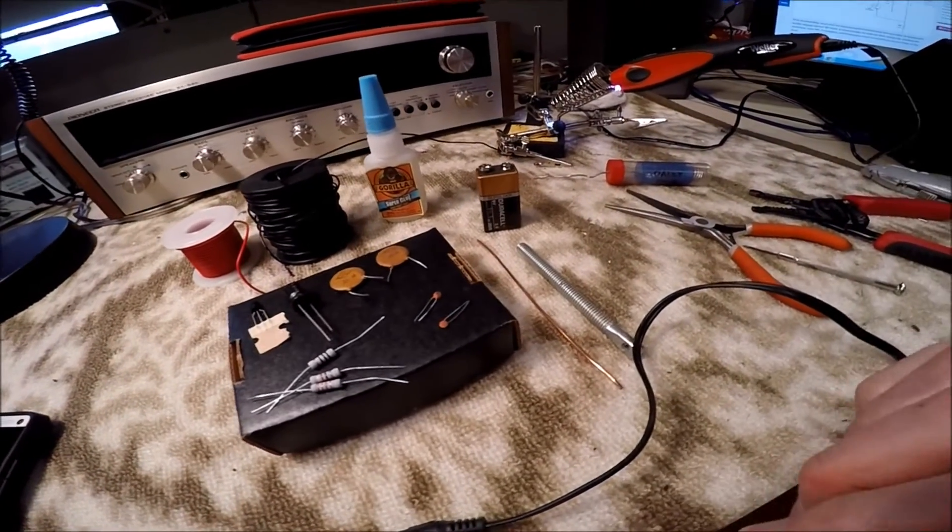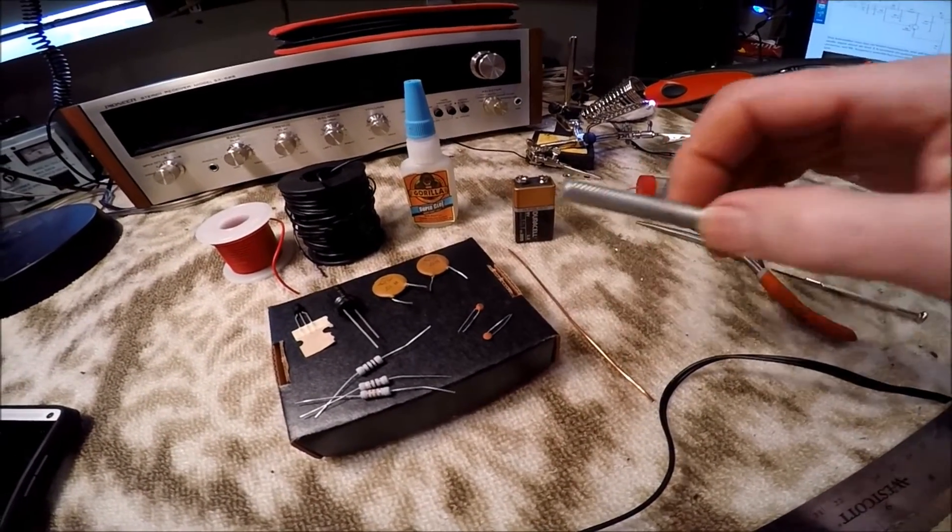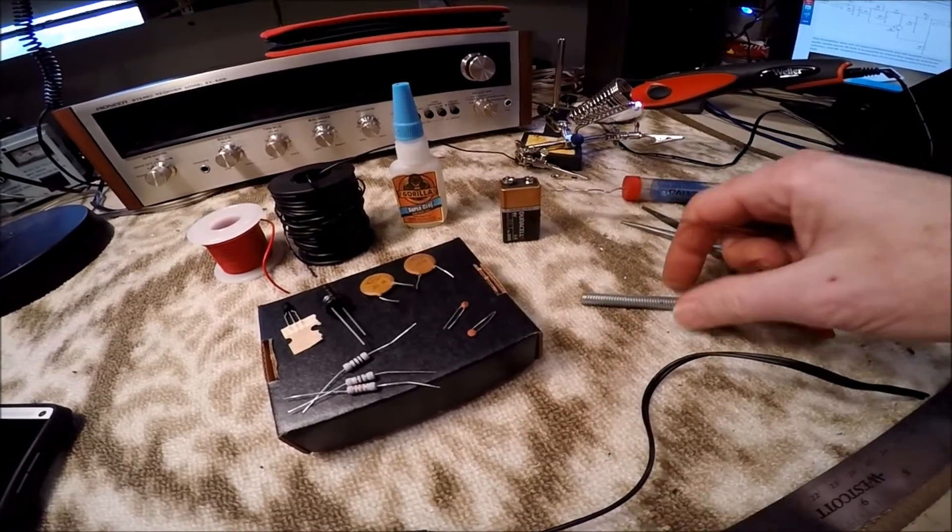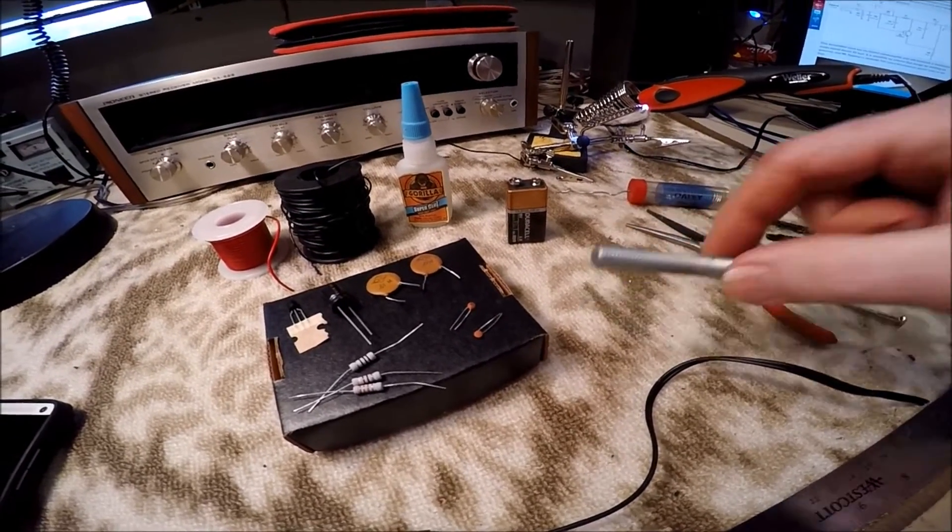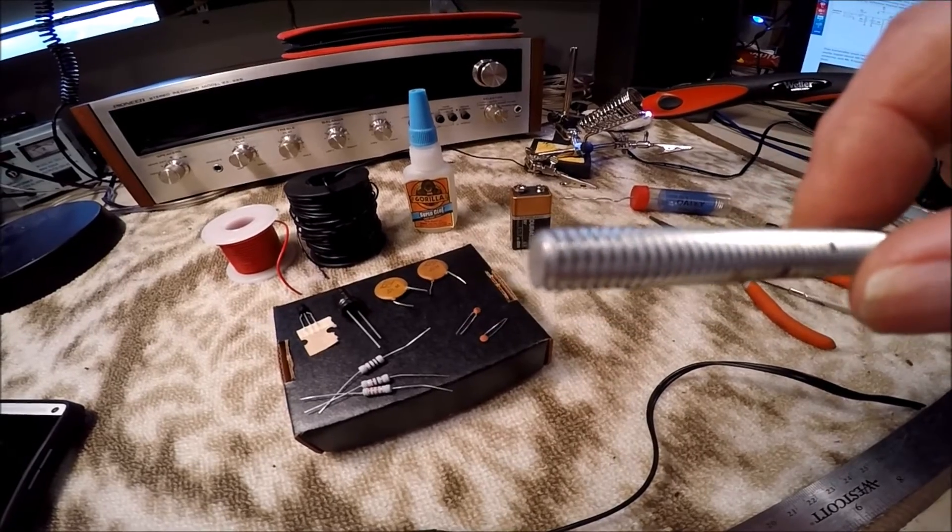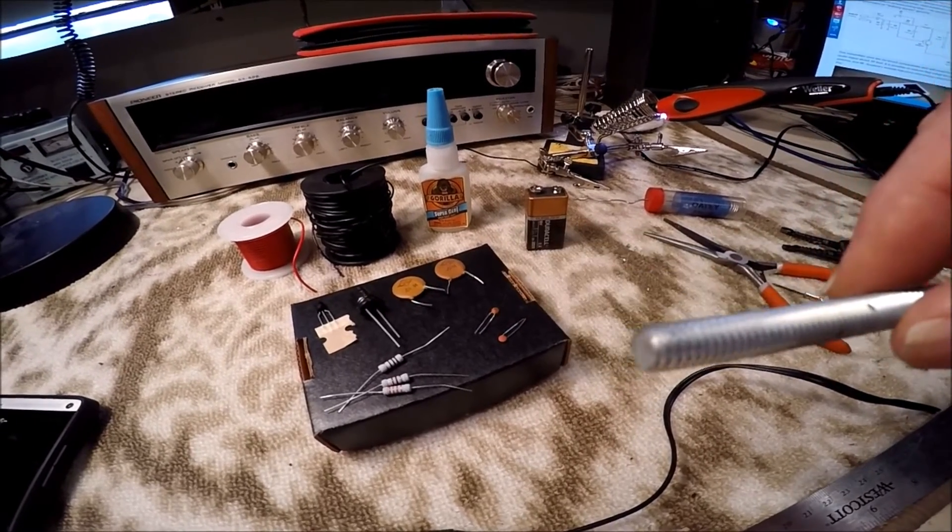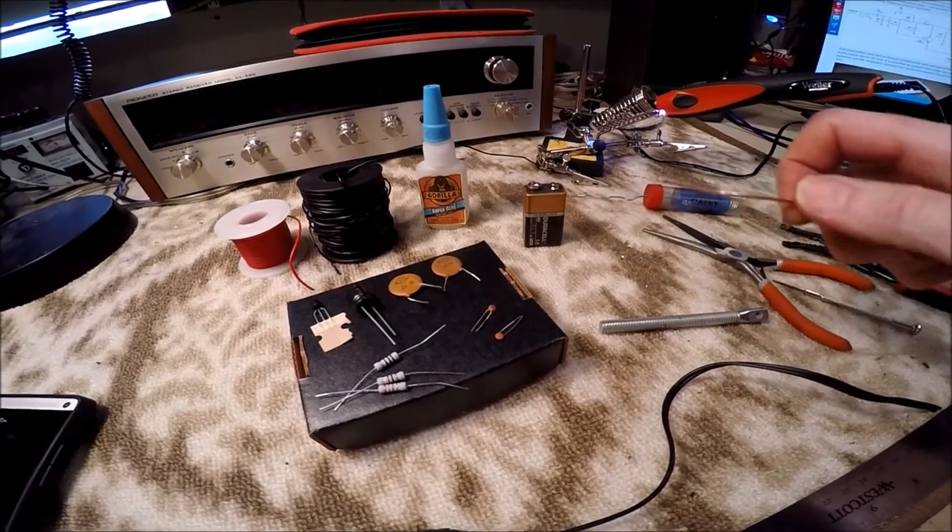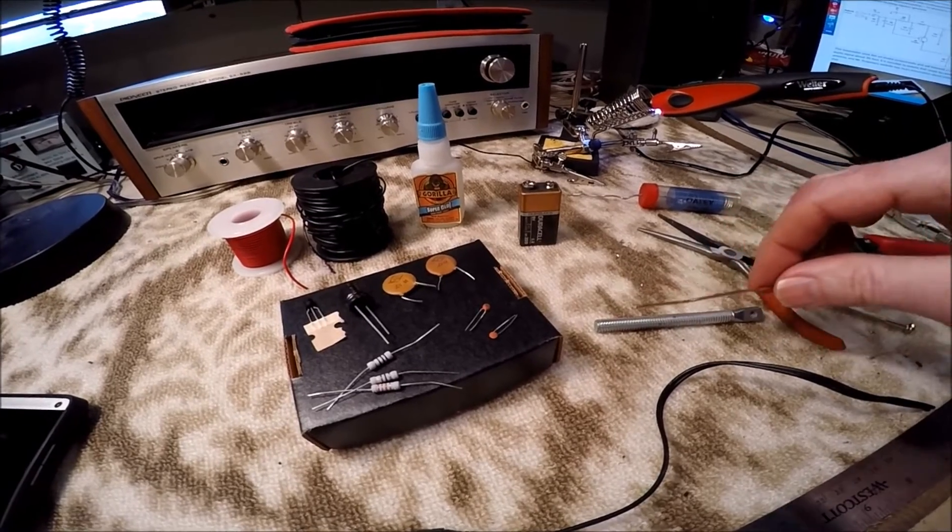So the first thing we want to do is form our little coil, and we're going to take this wire here, and we're going to wrap about four turns around here, very closely wound one next to the other. Get them in tight, and let's do one step at a time. Let's get it wound on here first.